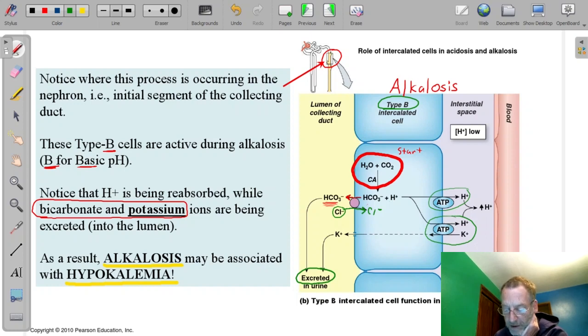So as we pump the hydrogen into the interstitial fluid, we're removing potassium. So they're going in opposite directions. So the potassium then leaves, and that may lead to hypokalemia.